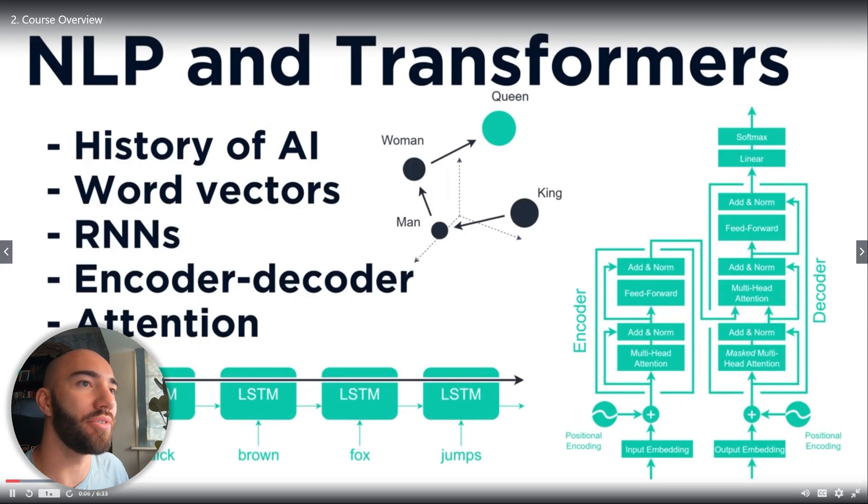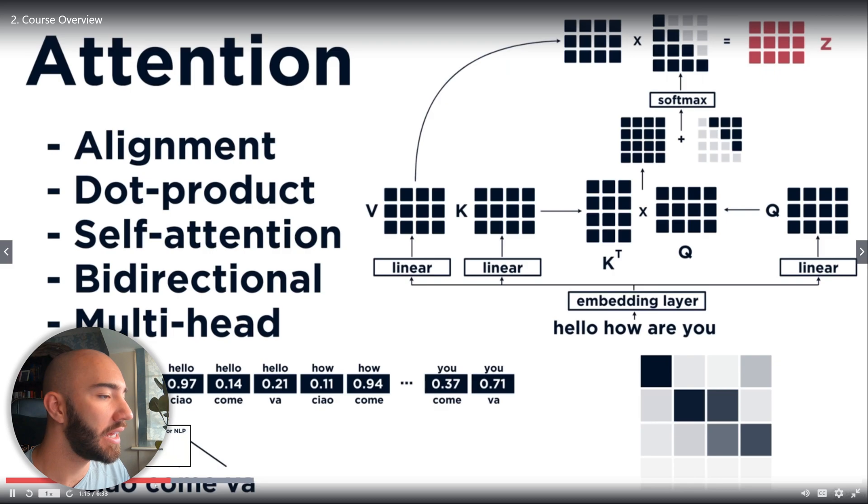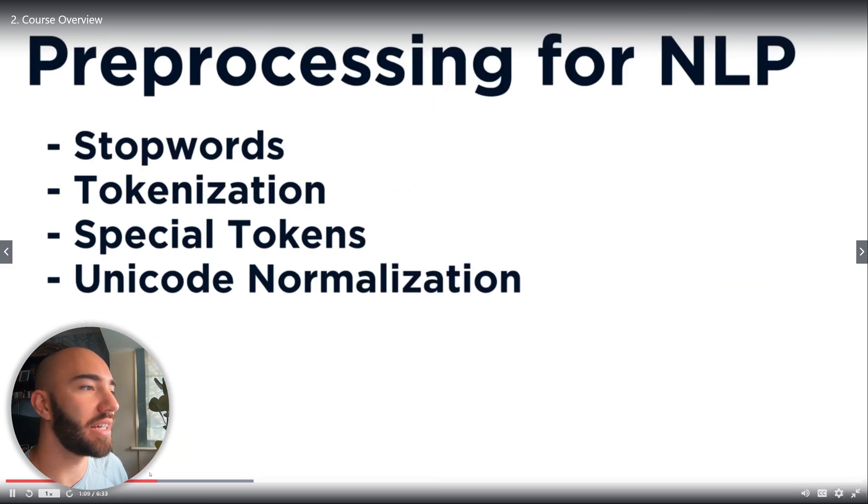So first thing is NLP and Transformers where I give a quick summary of NLP in general, the history of NLP leading up to Transformers. Then move into a bit of pre-processing for NLP. Now this is just your basic stuff. I think the most relevant one here for us and Transformers is Unicode Normalization and Tokenization Special Tokens.